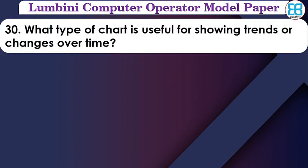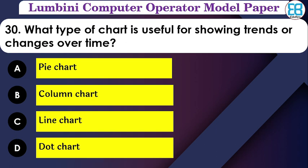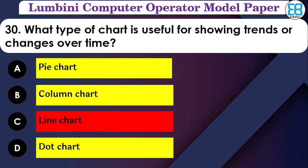What type of chart is useful for showing trends or changes over time? The options are: pie chart, column chart, line chart, dot chart. The correct option is line chart — a line chart is useful for showing trends and changes over time, like a share market graph.